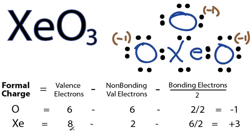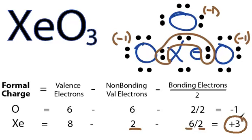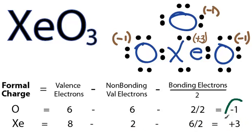For the xenon, it has 8 valence electrons minus the 2 non-bonding, and then the 6 bonding valence electrons divided by 2. 8 minus 2 minus 3 is plus 3. Since these aren't 0, I'm thinking this is probably not the best structure for XeO3.